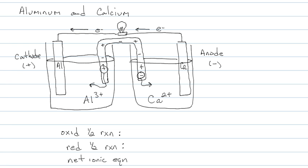So here's the picture of the aluminum and calcium voltaic cell. Anions go to the anode. Cations go to the cathode. Since calcium is higher up, it is the anode, and anode is oxidation.